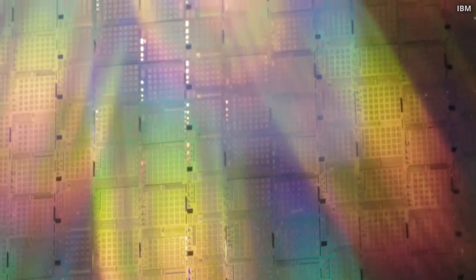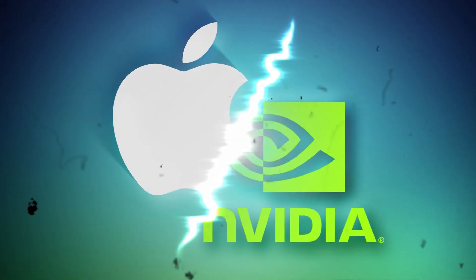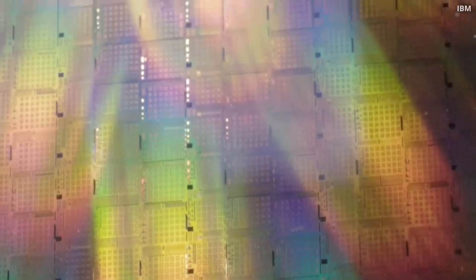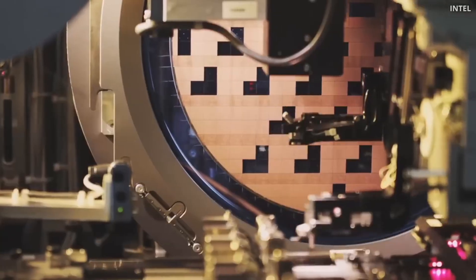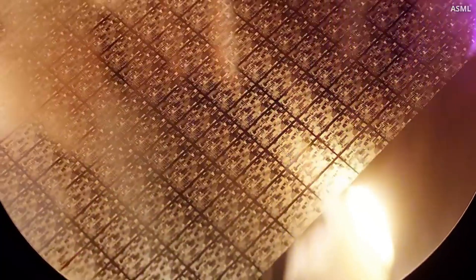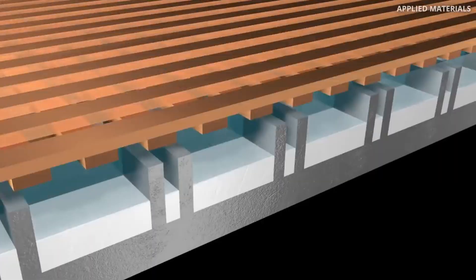This is why tech giants like Apple, Google, and NVIDIA are all pouring money into designing their own custom chips. It's not just about saving money. It's about gaining an edge in performance, speed, and efficiency. The kind of edge that defines who leads the future of AI and who falls behind.